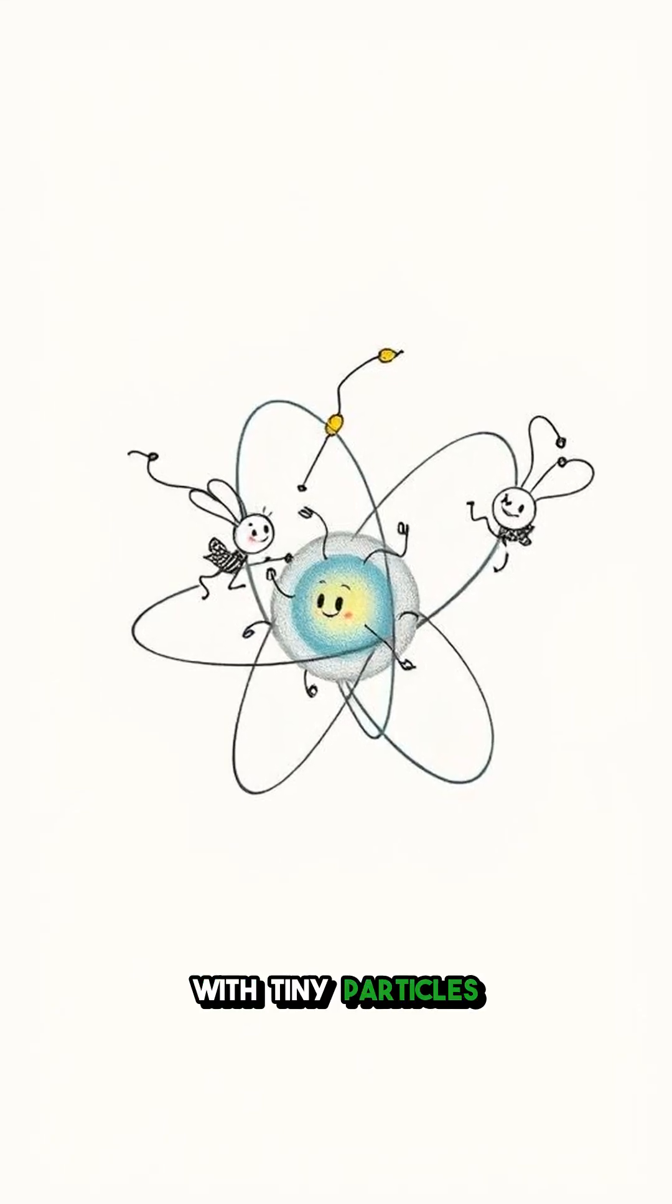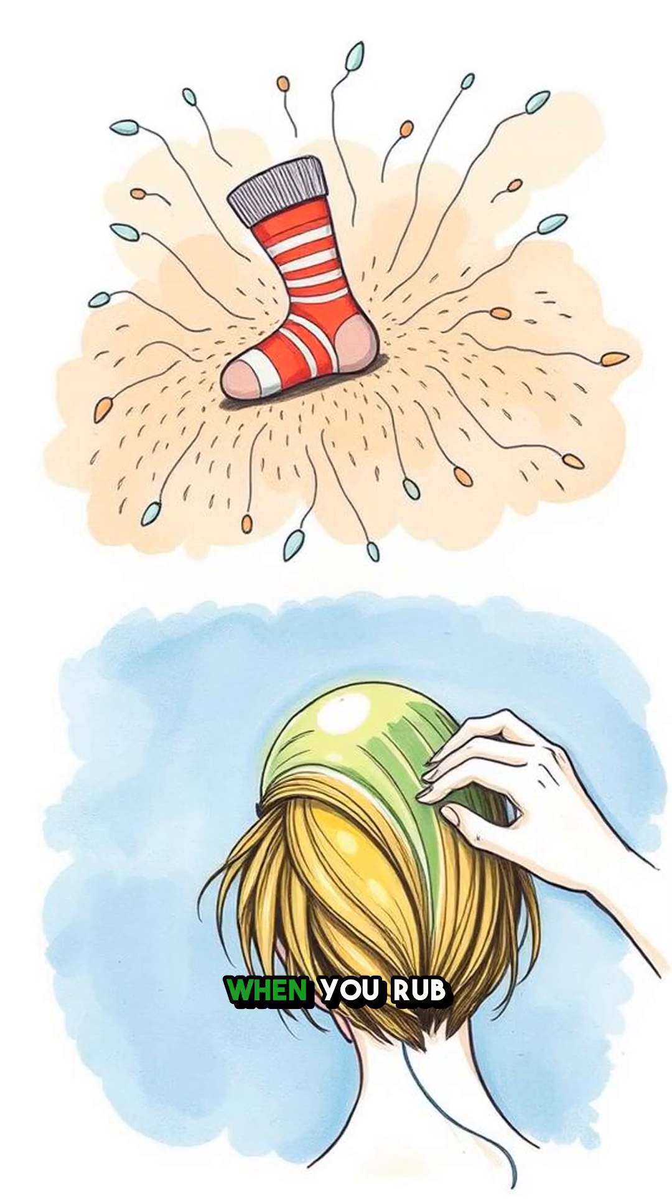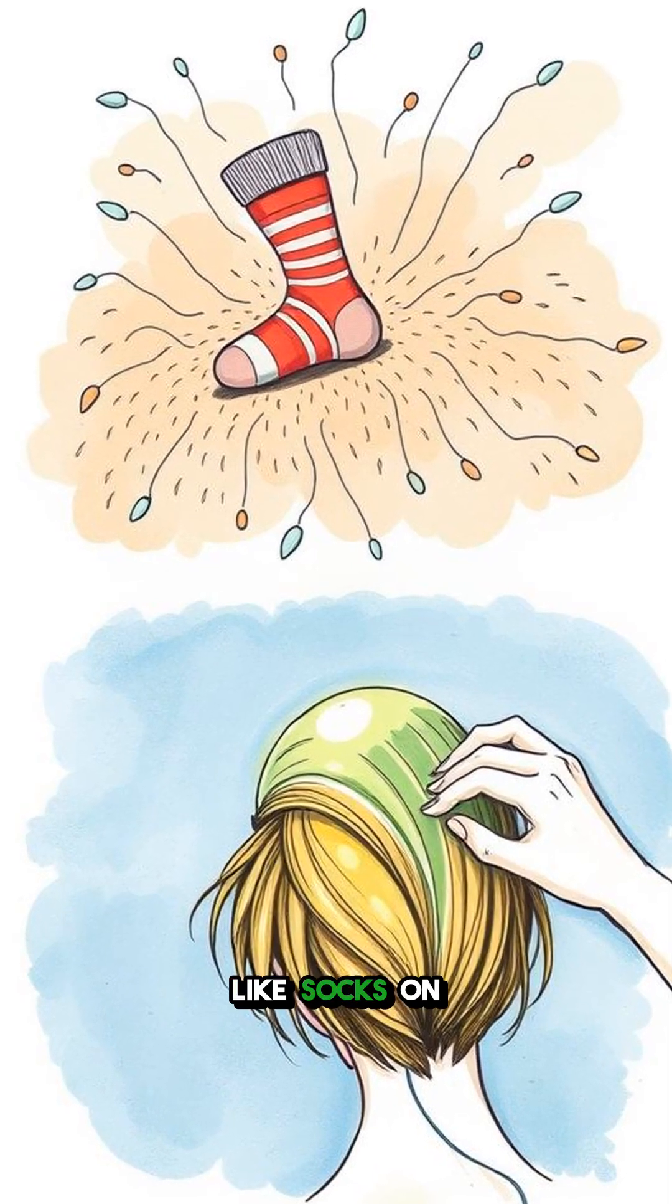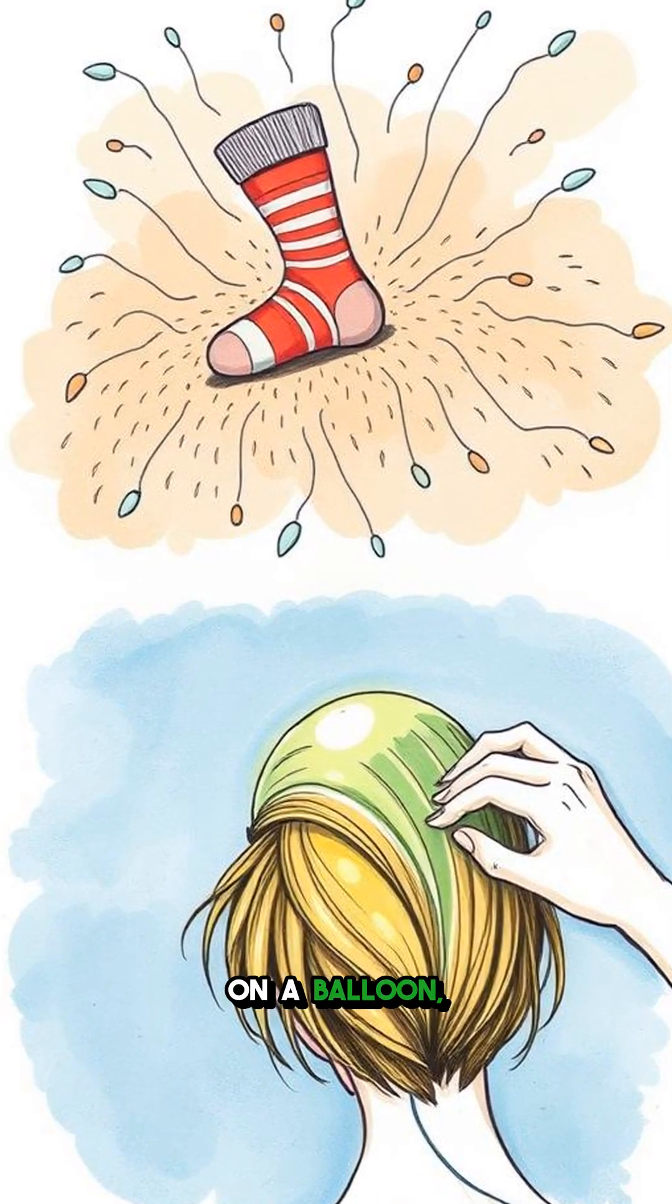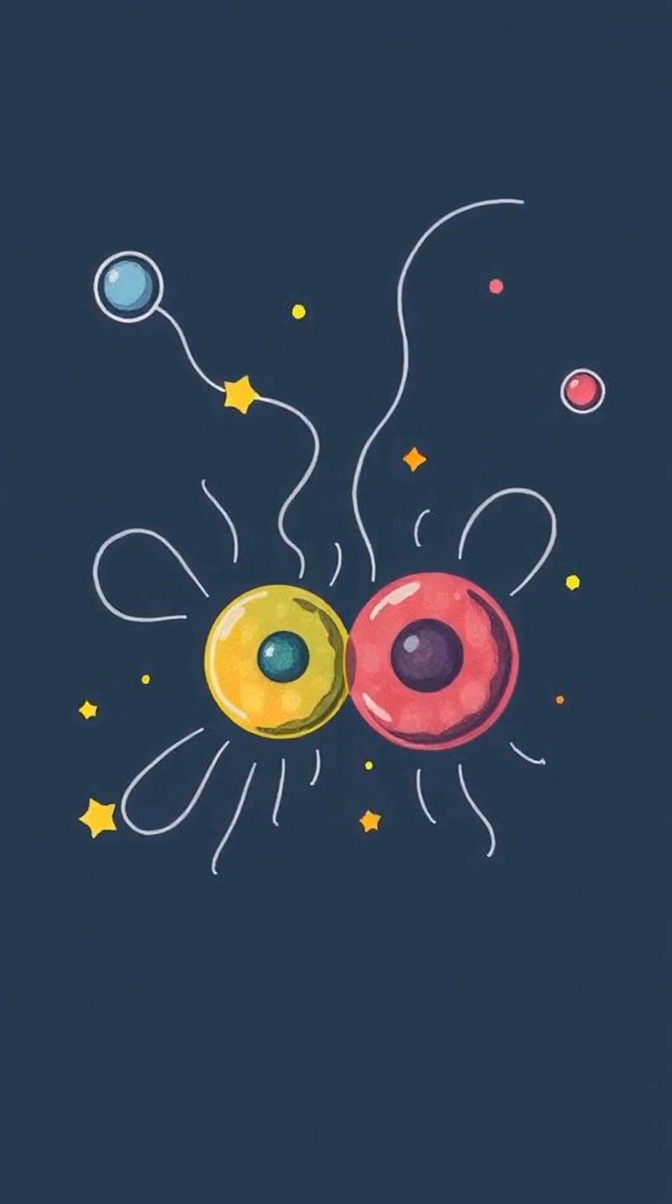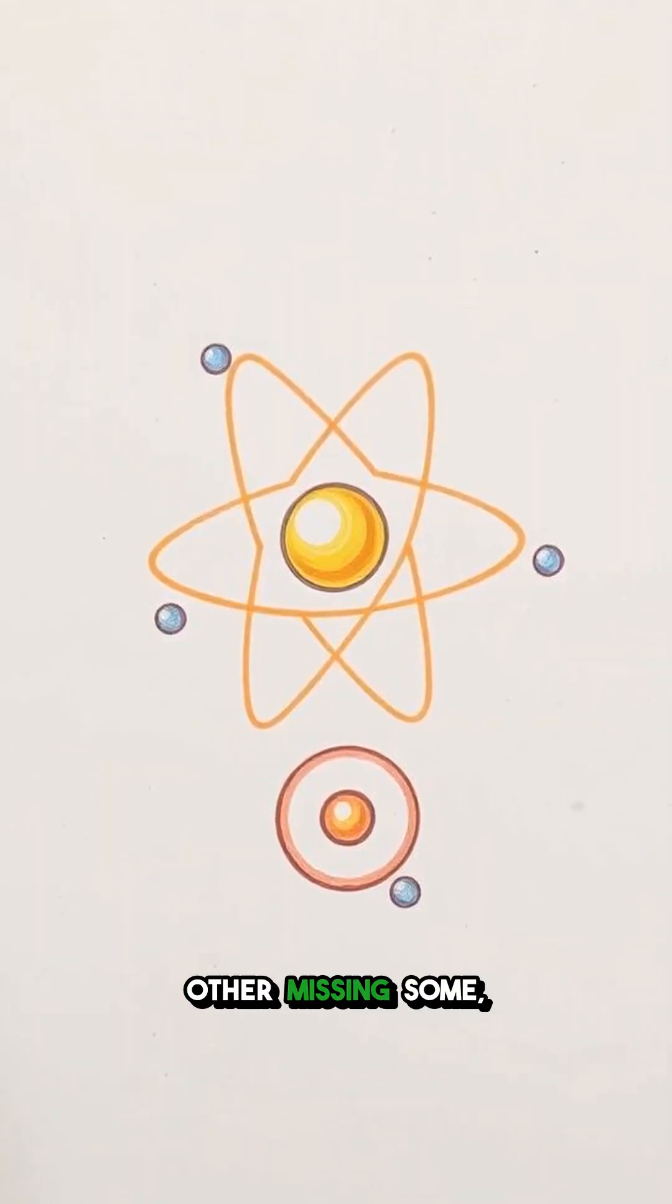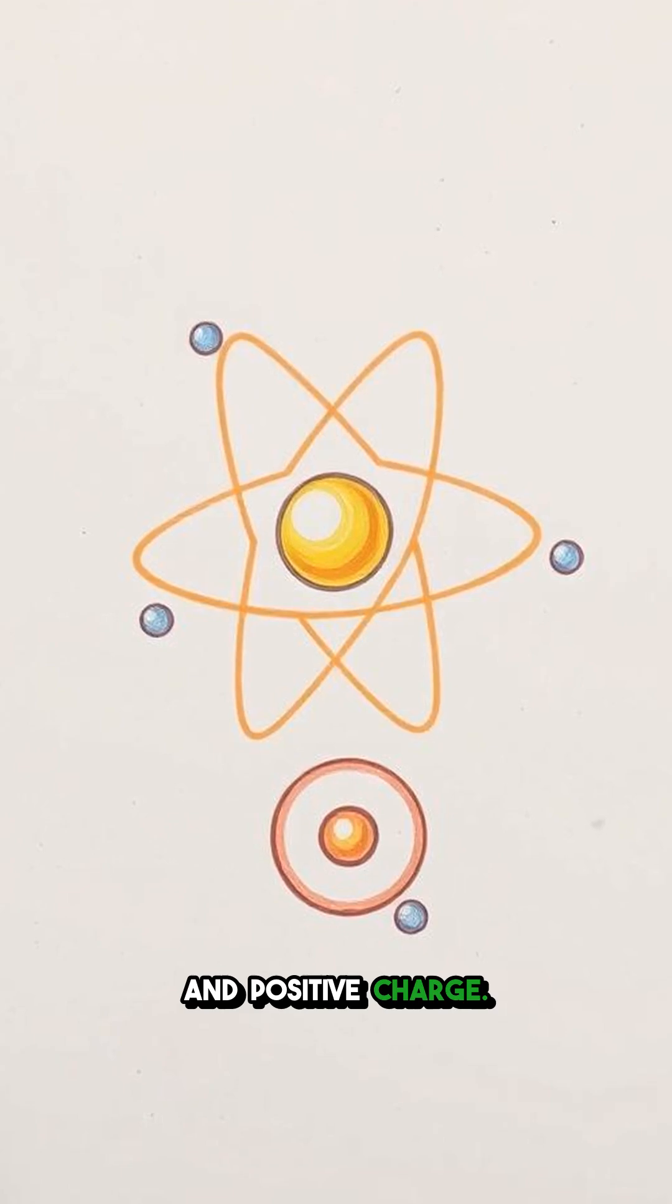It all starts with tiny particles called electrons that love to party on atoms. When you rub two things together, like socks on carpet or hair on a balloon, you steal some electrons from one and dump them on the other. This leaves one thing with extra electrons and the other missing some, creating a negative and positive charge.